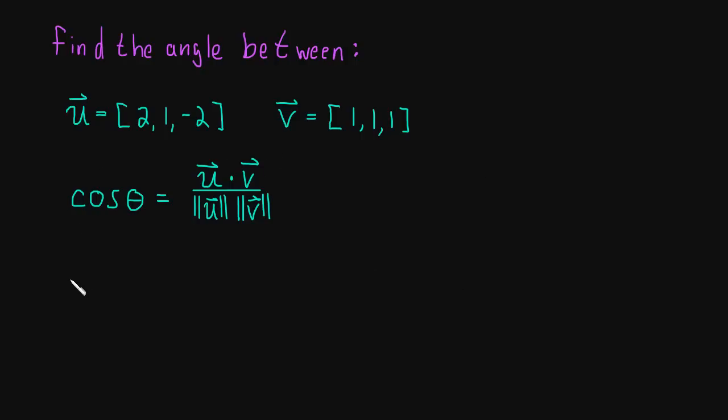The dot product of u and v, u dot v is equal to 2 times 1, that's 2, plus 1 times 1, that's 1, plus negative 2 times 1, that's just negative 2 or minus 2. So this comes out to be 1.